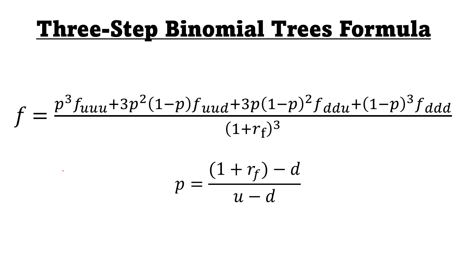Let's talk about a three-step binomial tree. Here we have the two formulas that we're going to need to apply. The first one is in order to calculate F, which is the current value of an option.